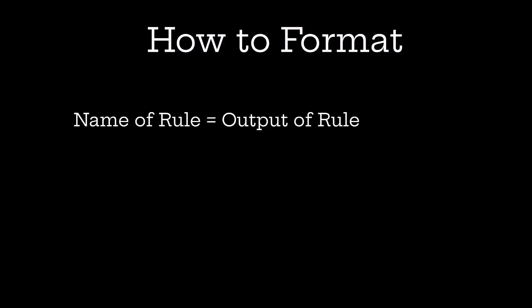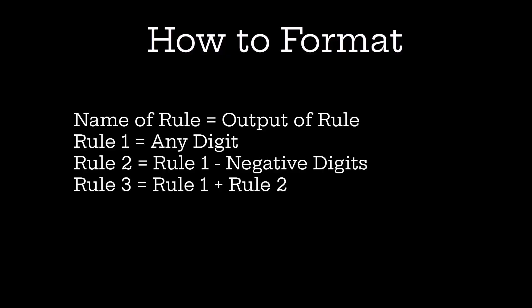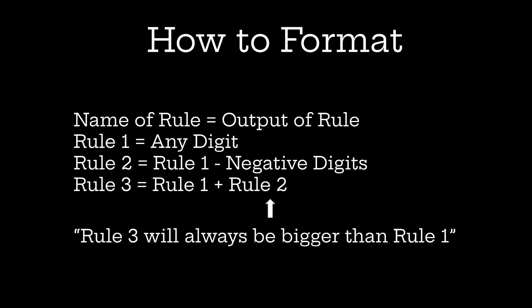This is how I will format all stochastic grammars throughout this presentation. I'll have a name of the rule, and then I'll have the output of the rule on the other side. This is similar to the more official formatting found in the chapter. As an example, rule 1 would be any digit, rule 2 would be rule 1 minus all the negative digits, and rule 3 could be a new rule that contains the previous rules — for instance, rule 1 plus rule 2. The advantage of this formatting is we can make statements about the output that are always true or true most of the time. In this deterministic case, rule 3 will always be bigger than rule 1 because it is rule 1 plus a non-negative digit.